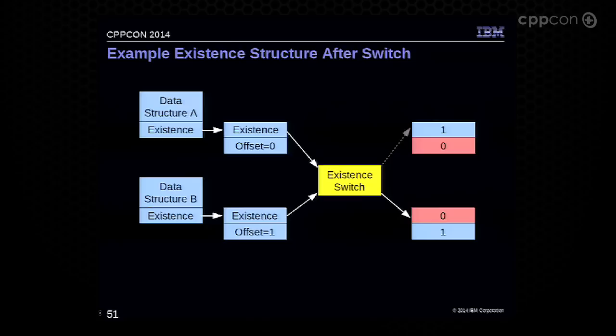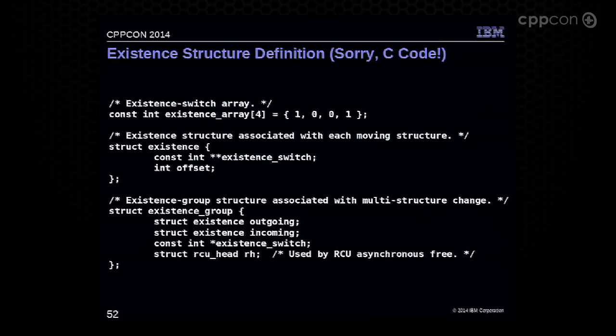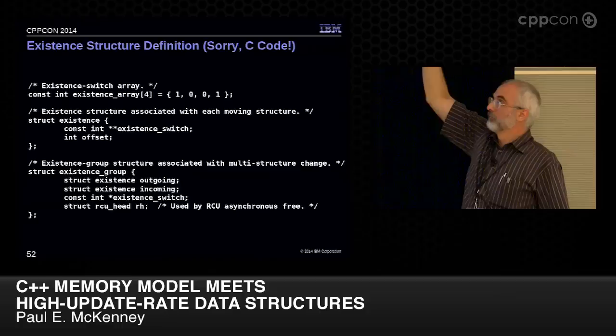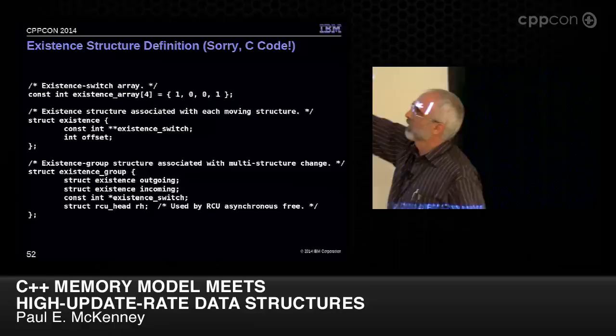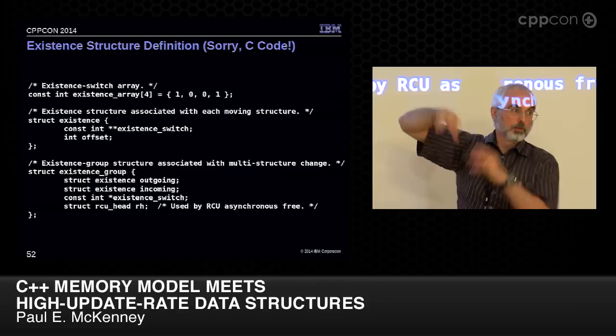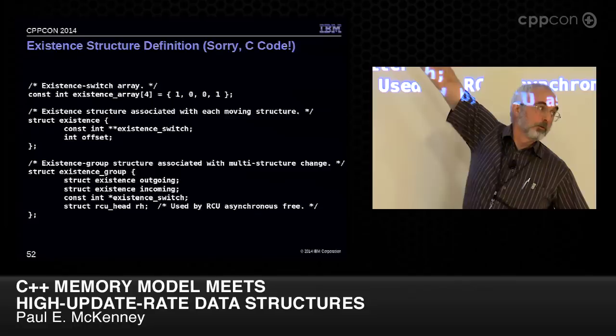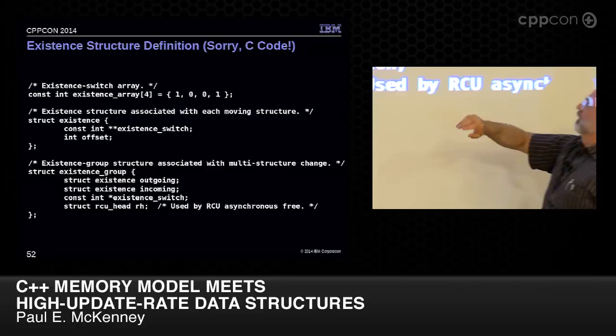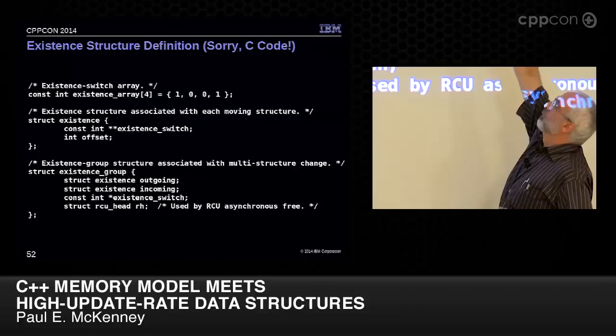You can switch back and forth with single stores, making elements appear and disappear. In the code — which is C, think of it as pseudocode — we have an array with entries (1, 0) and (0, 1), representing the two states. Each is a const pointer to an existence switch with an offset. The outgoing existence group corresponds to the upper element and the incoming to the lower one. The existence switch is updated to point to either the zeroth or second element of that array. This is used by RCU to mediate freeing: instead of taking the synchronize_rcu latency, you use call_rcu — a fire-and-forget that invokes a callback (often free) when the grace period expires.